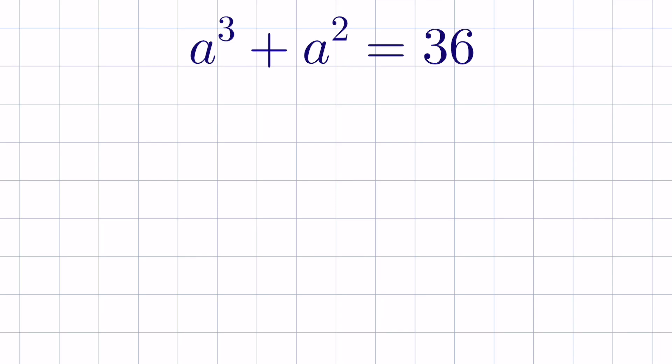a cube plus a square is equal to 36. We have to find the value of a, where a is a real number. So let's try — we can write a cube plus a square, and send 36 to the left hand side.